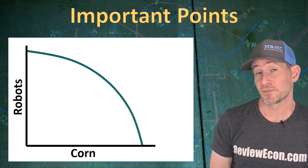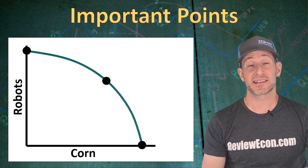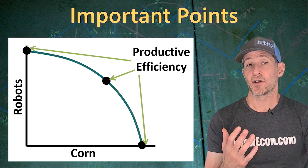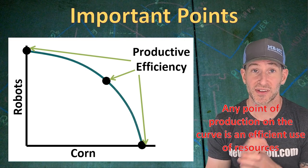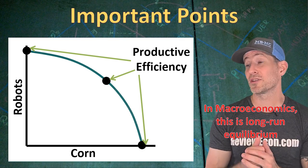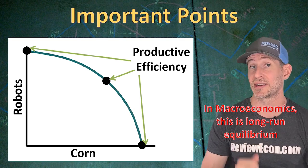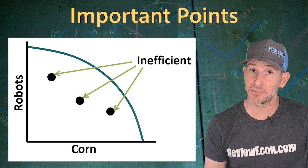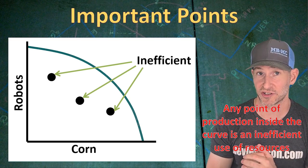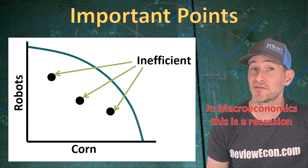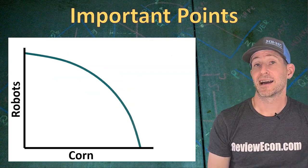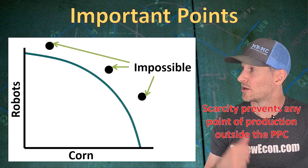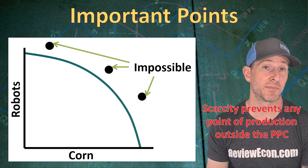Let's go over some important points about the Production Possibilities Curve. Any point of production on that curve means our resources are being used efficiently — we call this productive efficiency, meaning we're getting the most out of our resources. In macroeconomics, we call this long-run equilibrium, where our unemployment rate equals the natural rate, or we have full employment. Any point inside the curve is an inefficient use of resources, meaning some resources are sitting idle. In macroeconomics, we call this a recession — high levels of unemployment where many workers are not producing. Points of production outside the curve are impossible; we have scarce resources and simply can't produce everything we want.